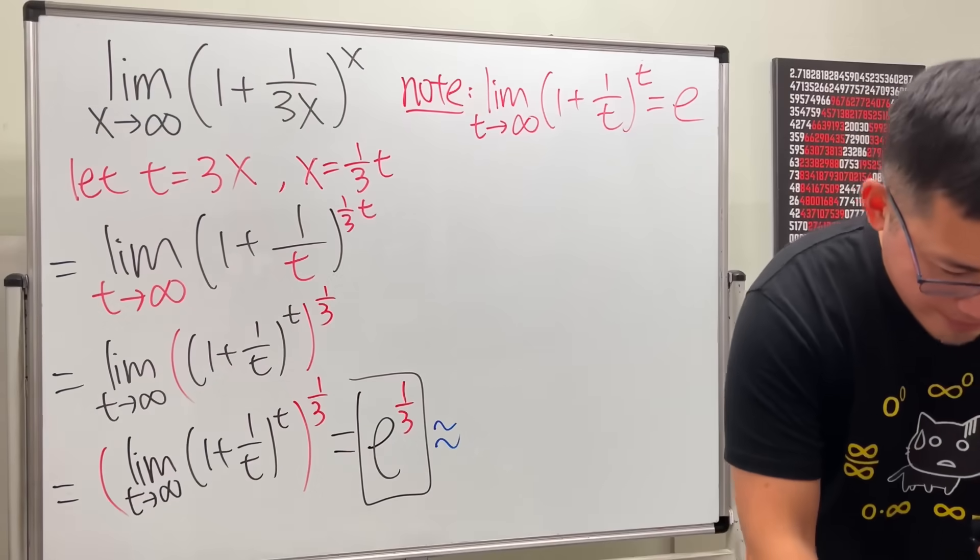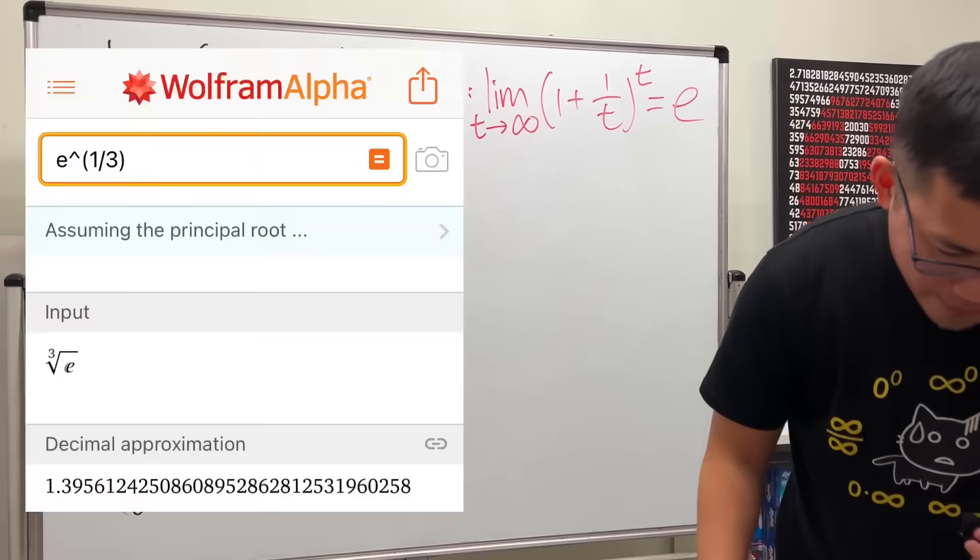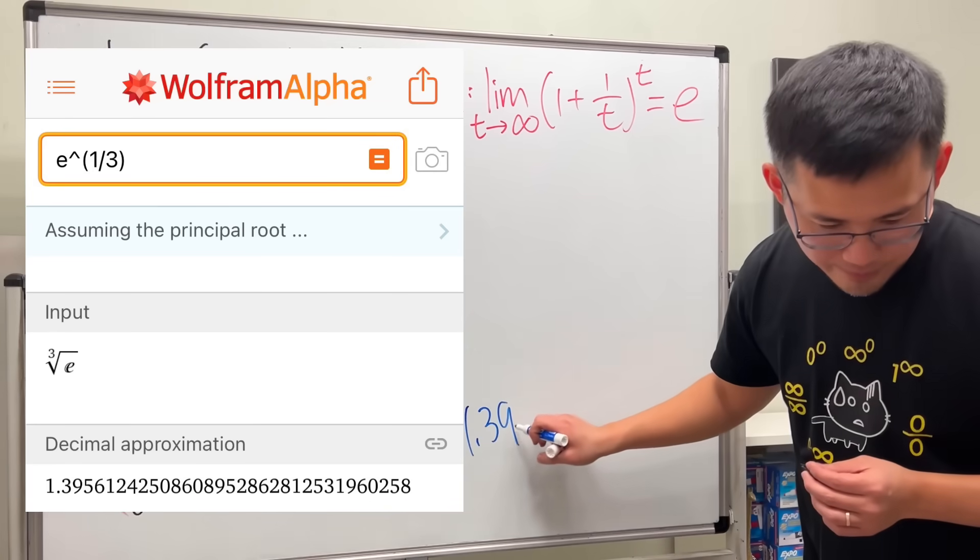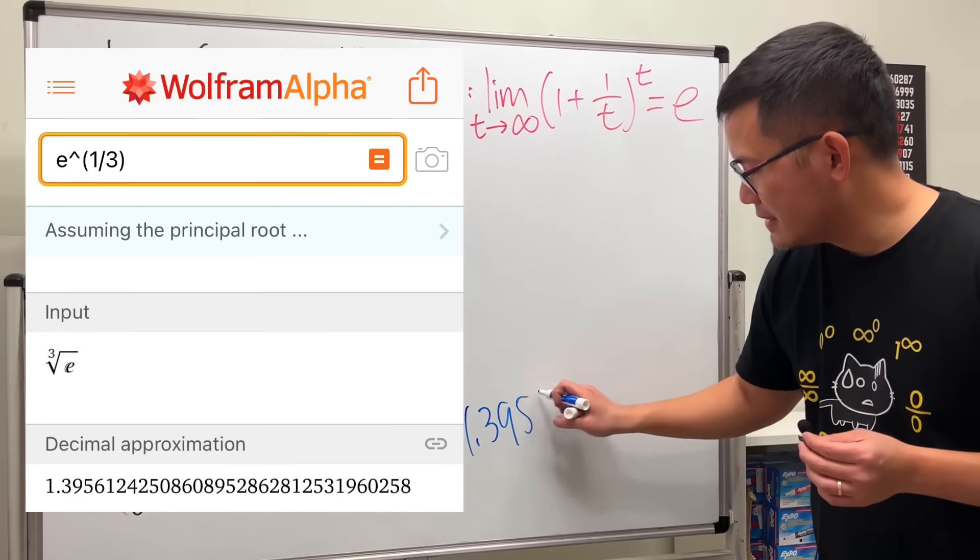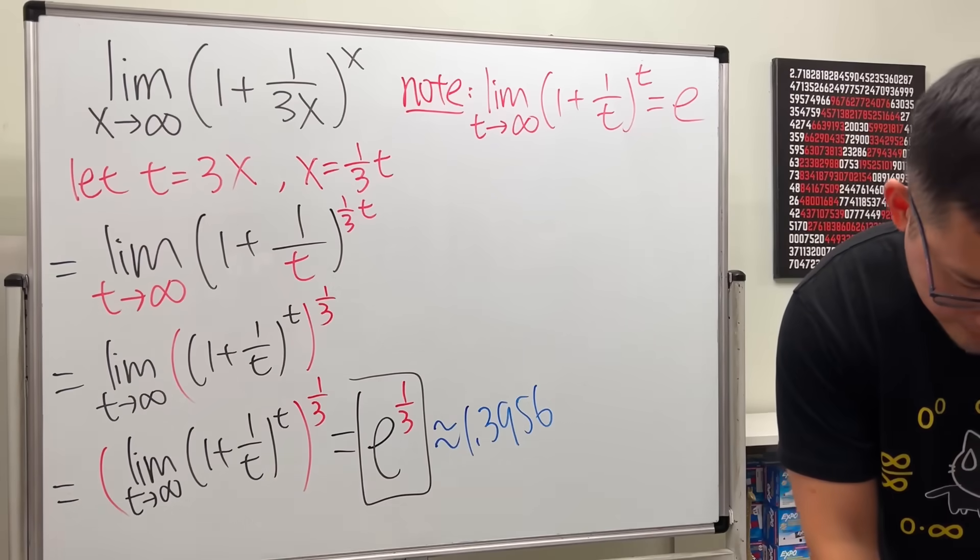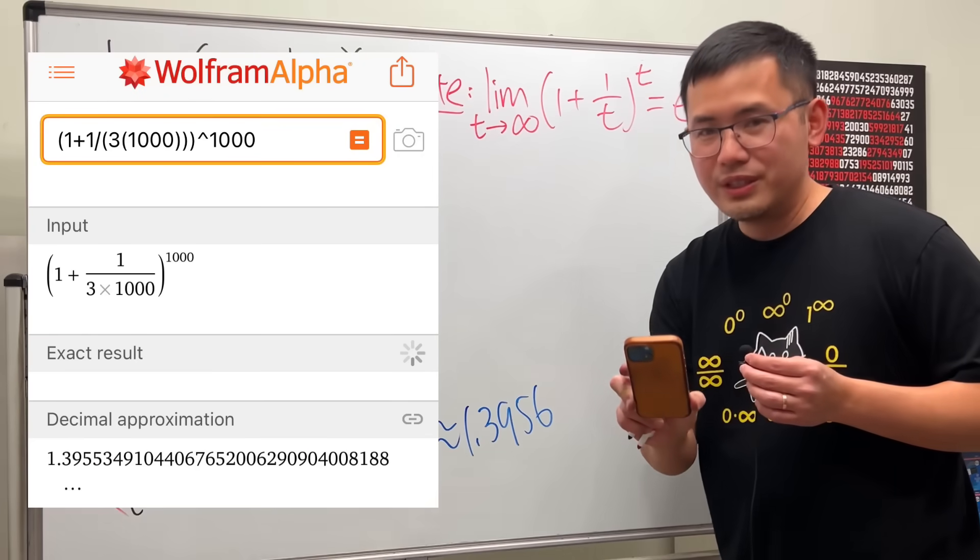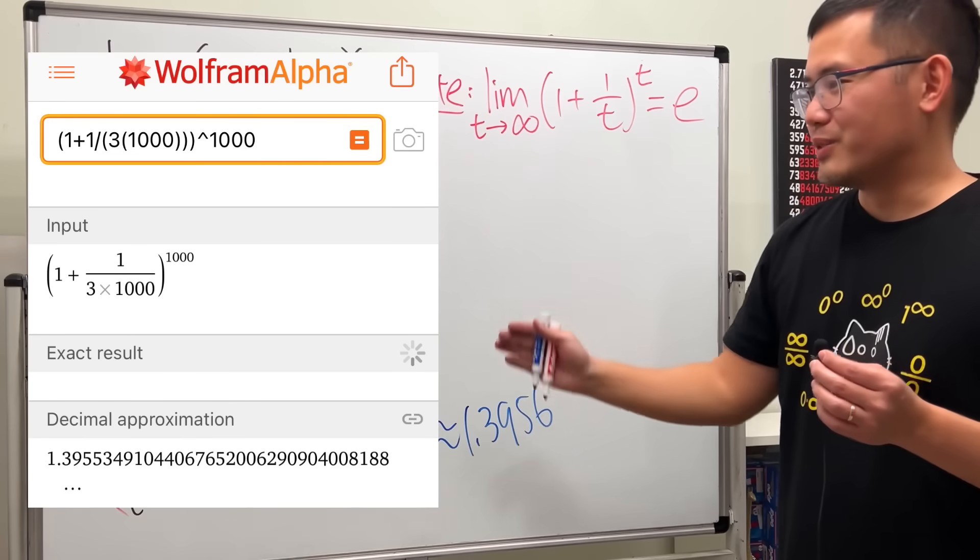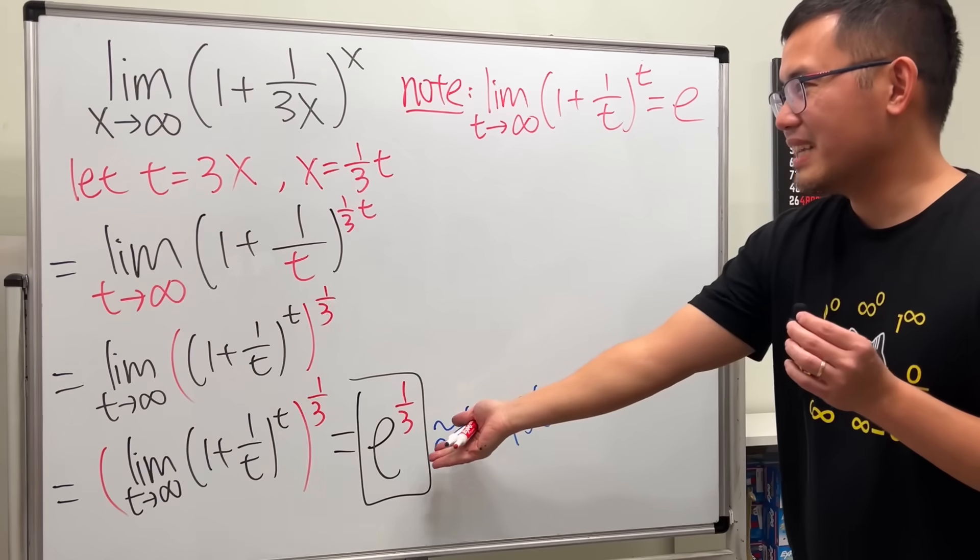I'll tell you. This, if you use a calculator to do it, you do get about 1.39. And here it's 5, 6. Earlier, we had 1.3955. But earlier we used 1,000. Now this is the exact answer for that limit.